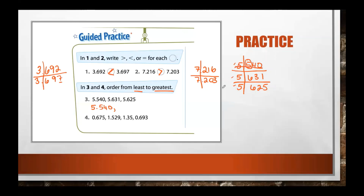That number is done. Now we look at the remaining two. The fives in the ones place are the same, and the sixes are the same, so we need to look at the next column. We have a three and a two. Out of three and two, which is lower? The two. So five and six hundred twenty-five thousandths is next, which leaves our remaining greatest number: five and six hundred thirty-one thousandths.